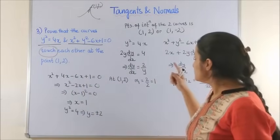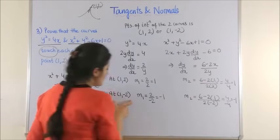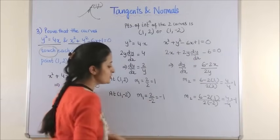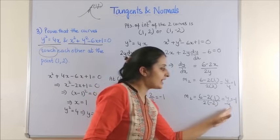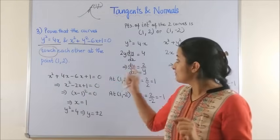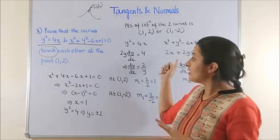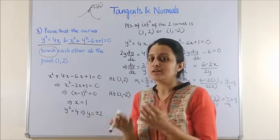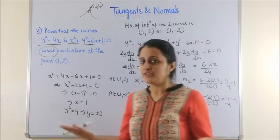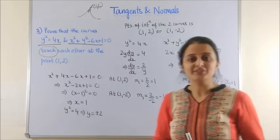Let's also check the point (1, −2). At (1, −2): m₁ = 2/(−2) = −1 and m₂ = (6 − 2)/(−4) = −1. So m₁ = m₂ = −1, meaning the curves also touch each other at (1, −2). We only needed to prove it for (1, 2), which is already confirmed.